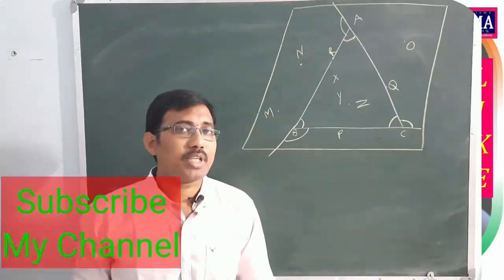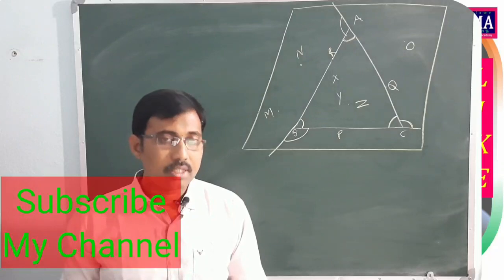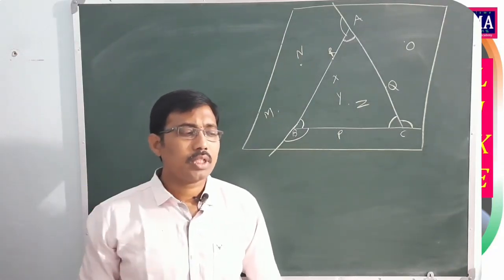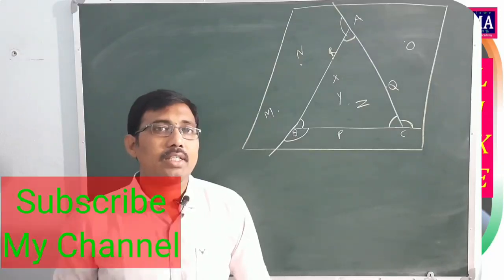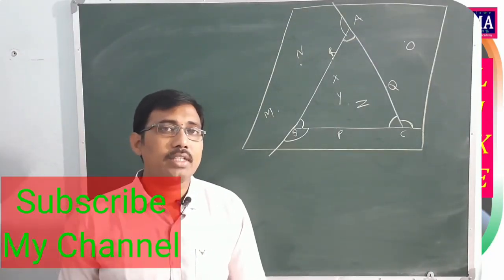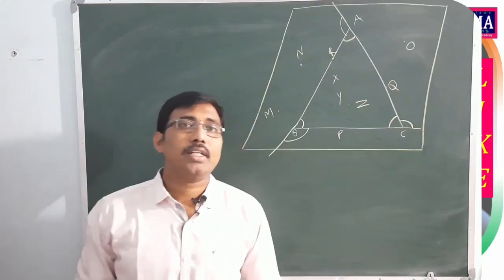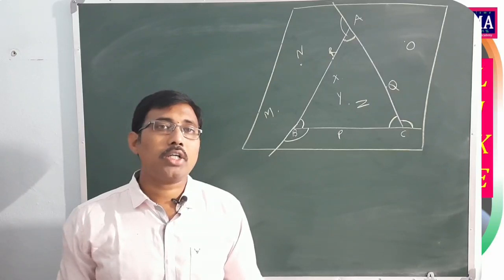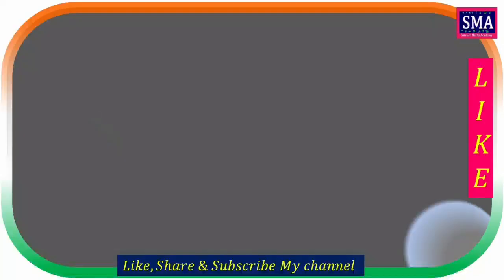Next: types of triangles. Triangles are divided into two categories: according to sides and according to angles. According to sides, there are three types: equilateral triangle, isosceles triangle, and scalene triangle. According to angles, there are also three types: acute angle triangle, right angle triangle, and obtuse angle triangle.